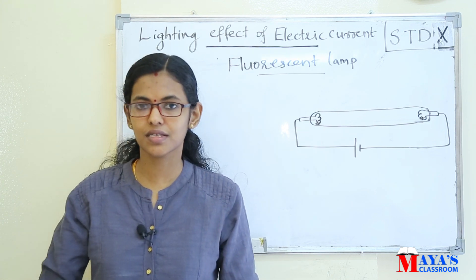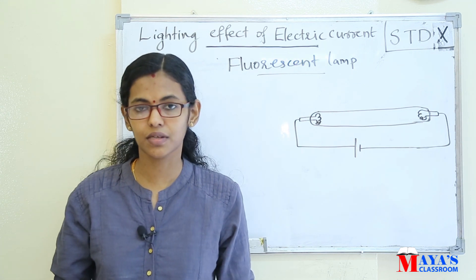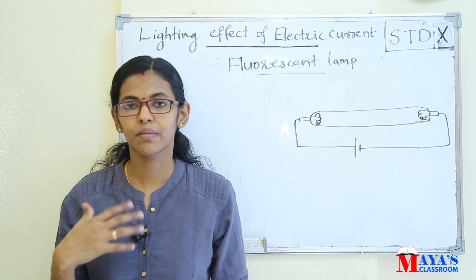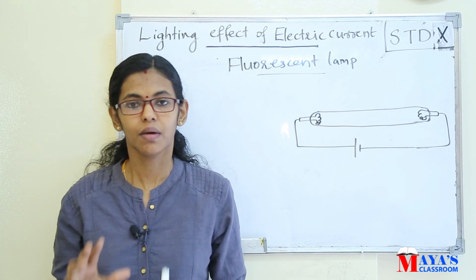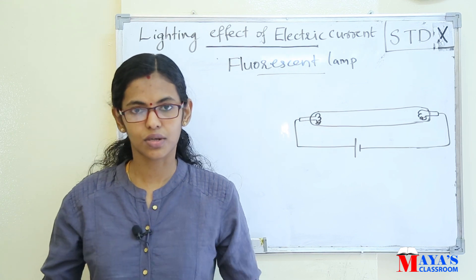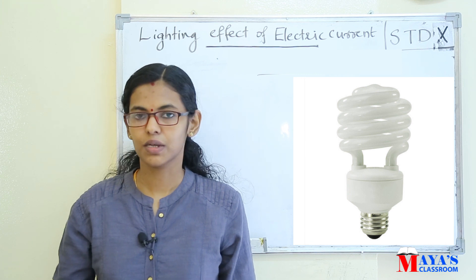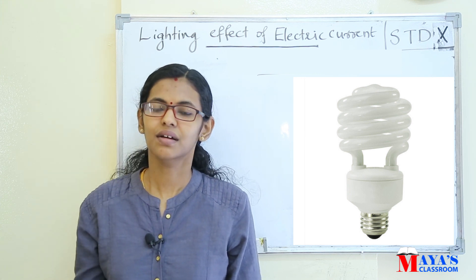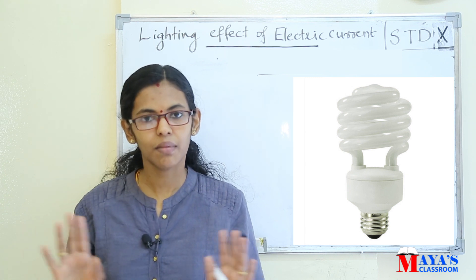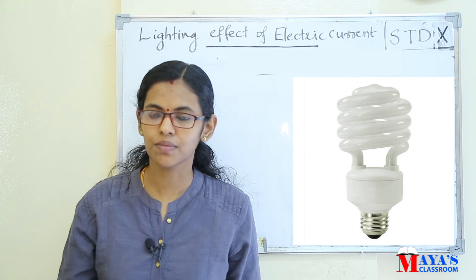The main disadvantage of the fluorescent lamp is related to mercury vapors, which are harmful to the atmosphere. The fluorescent lamp is also called a CFL — Compact Fluorescent Lamp. It uses an electronic circuit and emits electrons into mercury atoms to produce UV light, which is converted to visible light by the fluorescent coating. However, the main disadvantage of both CFL and the fluorescent lamp is that mercury is harmful to the atmosphere.